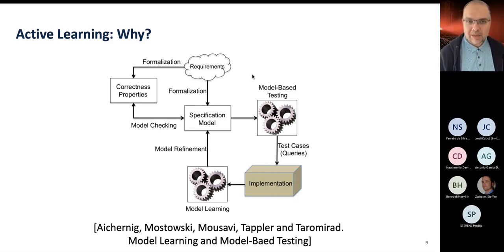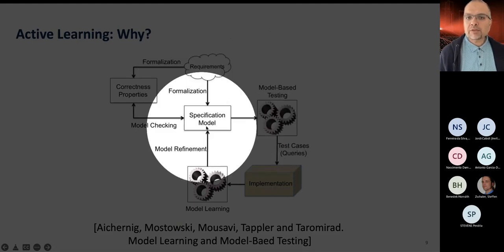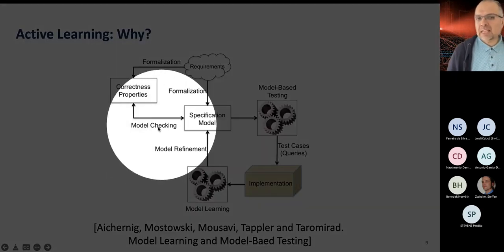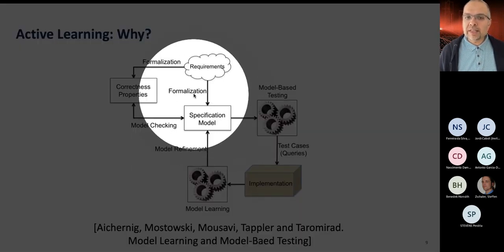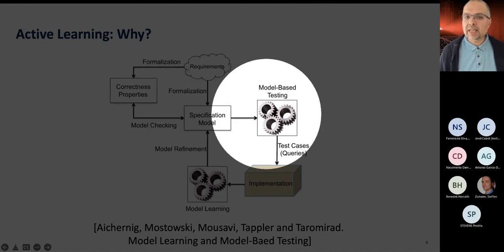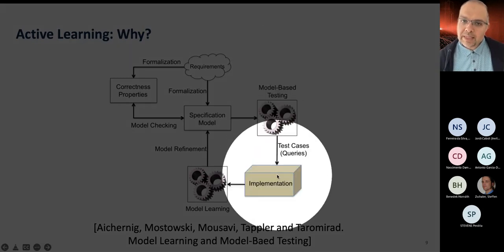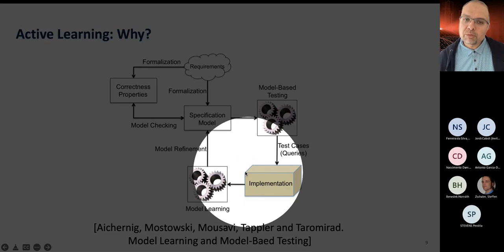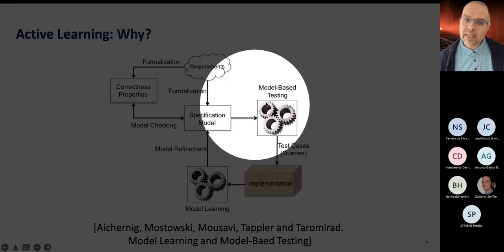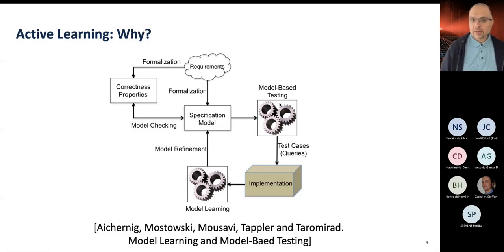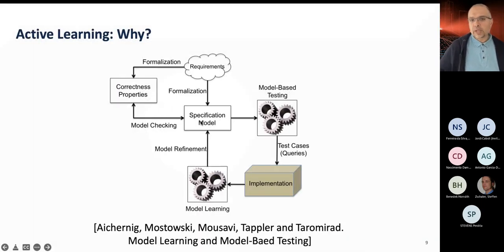The present research enables model-based testing when there are no models around by learning models for example from reference implementations, from different types of implementation that are around. How does our proposed technique work? You could start with a very simple or even an empty specification model which says everything is possible, so you only know what kind of input output behavior is possible with your system. Start with this very naive, basically empty specification and then generate some test cases to test your empty hypothesis. You will run a few test cases, you will run a few queries to your system and the outcome of that will be fed into an automatic engine that will construct a new hypothesis for you, and you will continue this loop as many times as needed until you have sufficient confidence that what you have learned as the model of the implementation is a good model, is a representative model.